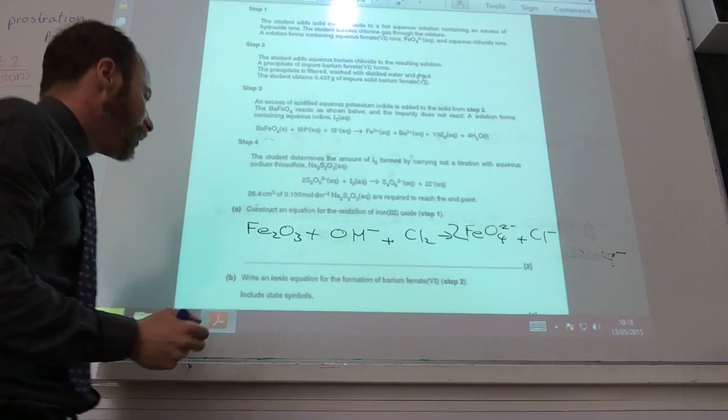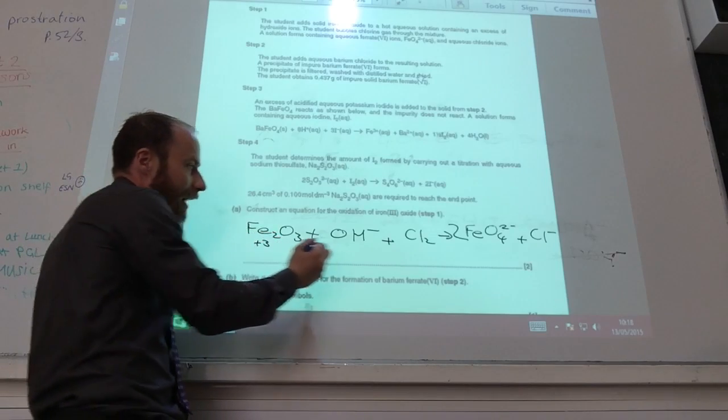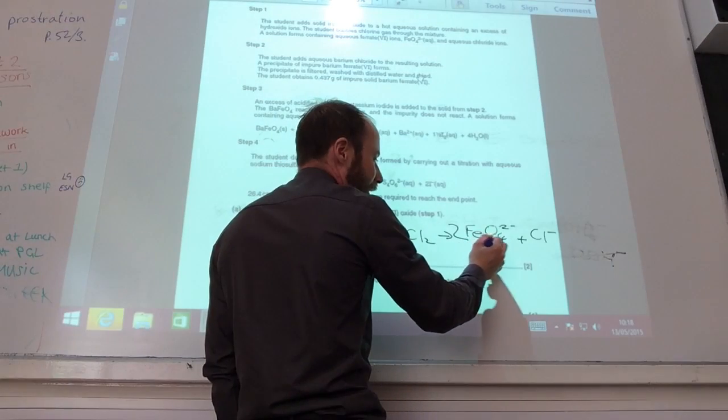Next thing, let's look. What is the oxidation number of iron there? Three, plus three. And there he is actually plus six.